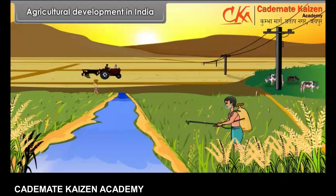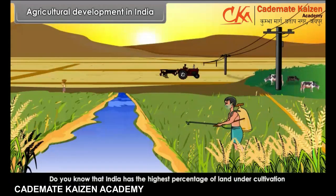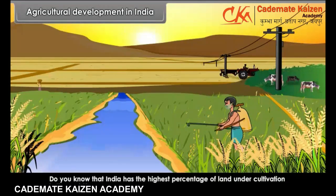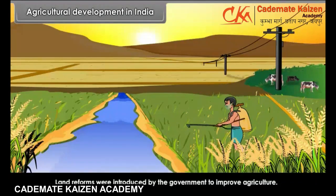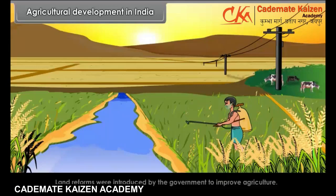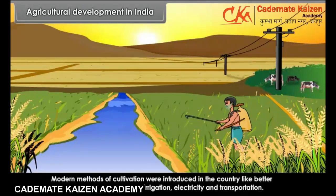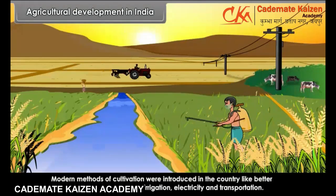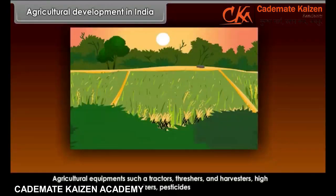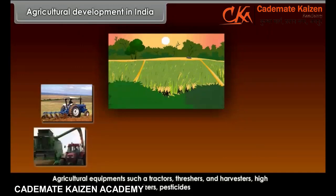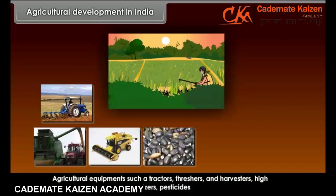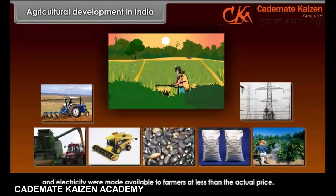India has the highest percentage of land under cultivation in the world. Land reforms were introduced by the government to improve agriculture. Under this, the government took lands of big landowners and redistributed them to landless laborers. Modern methods of cultivation were introduced, including better infrastructure facilities such as irrigation, electricity and transportation. Agricultural equipment such as tractors, threshers and harvesters, high yielding variety of seeds, fertilizers, pesticides and electricity were made available to farmers at less than the actual price.